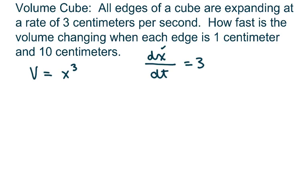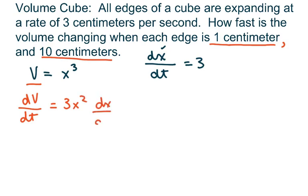When each edge is 1 centimeter, and then we have to do the second one when it's 10 centimeters. The first thing I'm going to do is take the derivative of the volume with respect to time. That's going to be 3x squared times the derivative of x with respect to t.